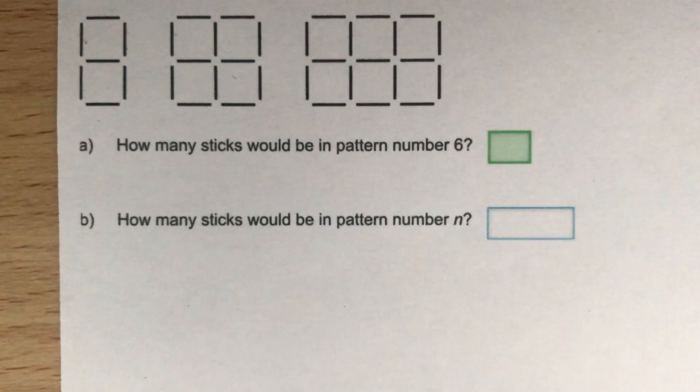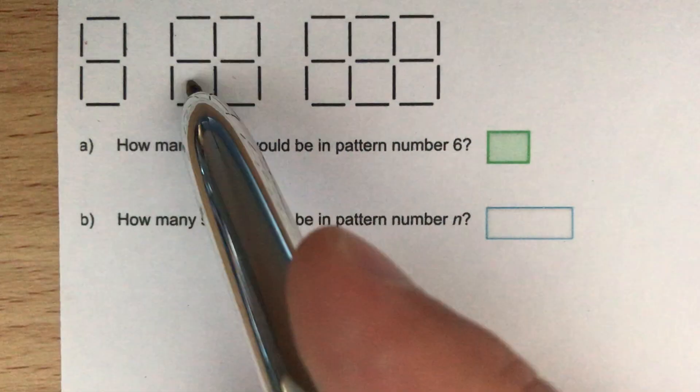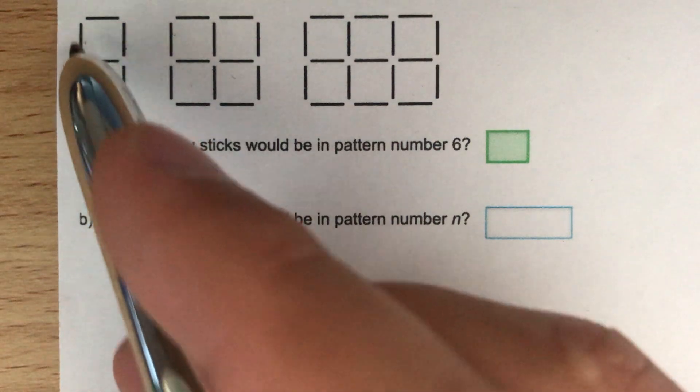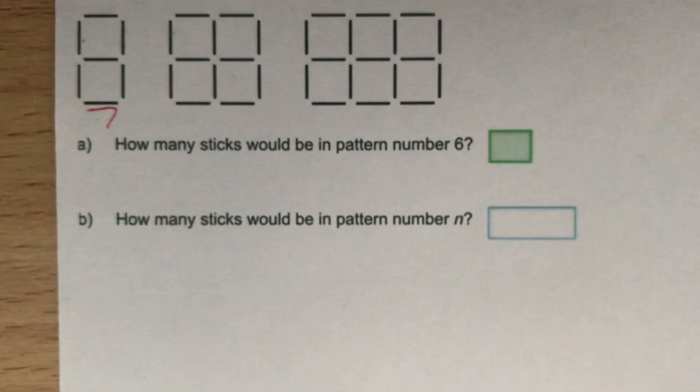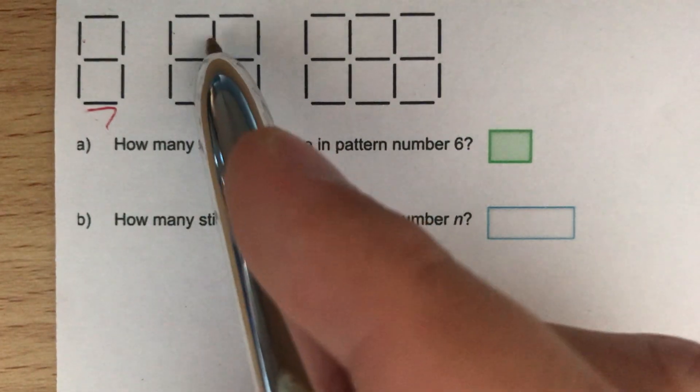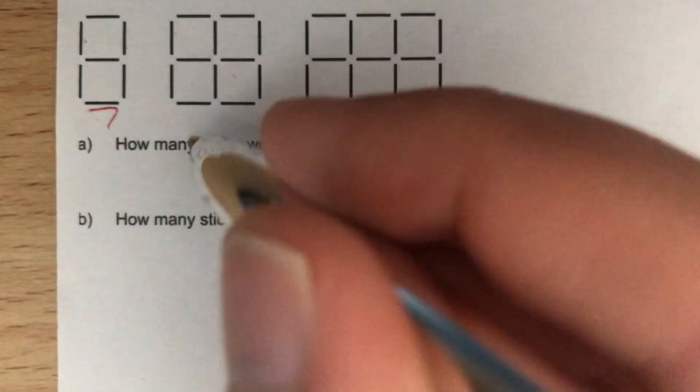We're given the first three steps of our pattern, we need to find the sixth one, so it'd be sensible to count up how many sticks there are in each of these three patterns. So counting the first pattern, we've got 7 sticks. Counting our second one, we have 12 sticks in total.